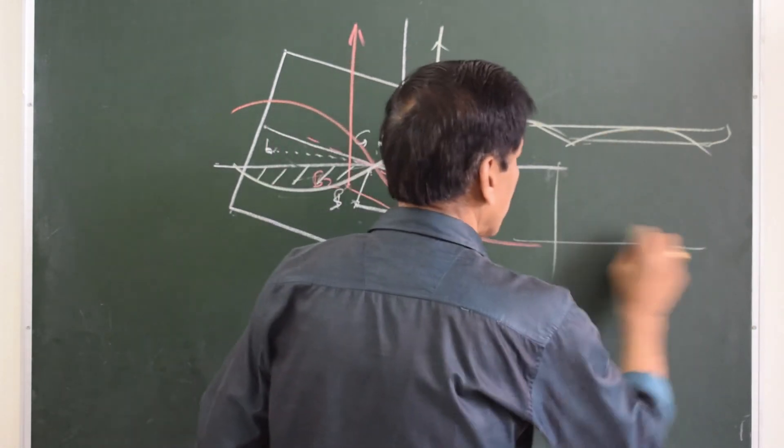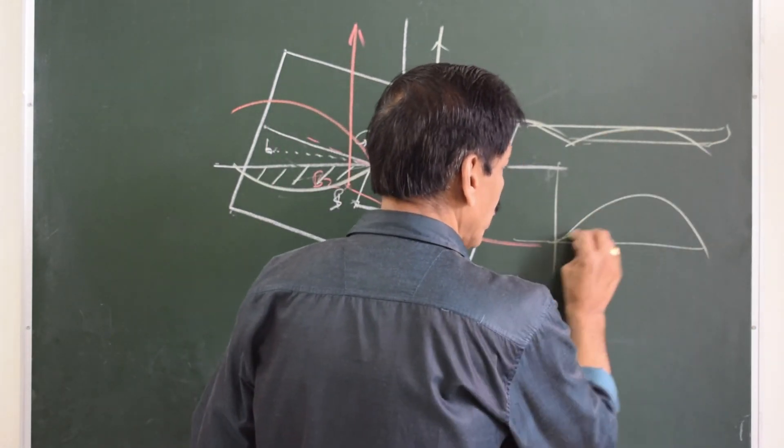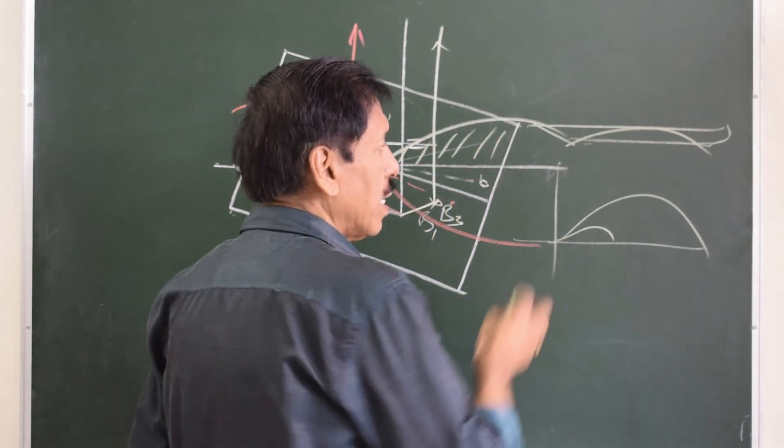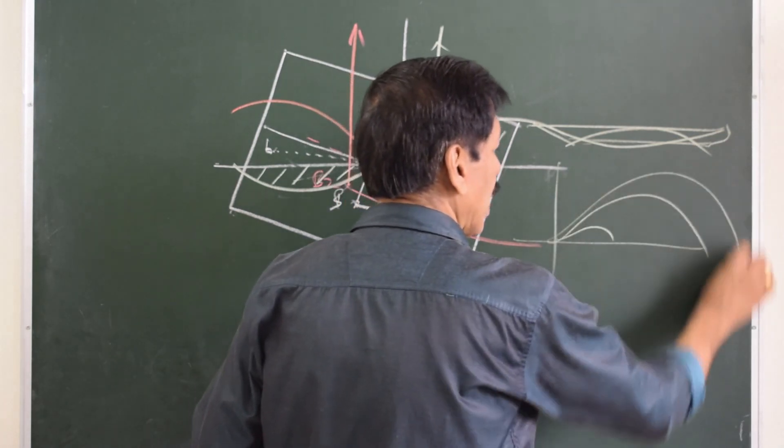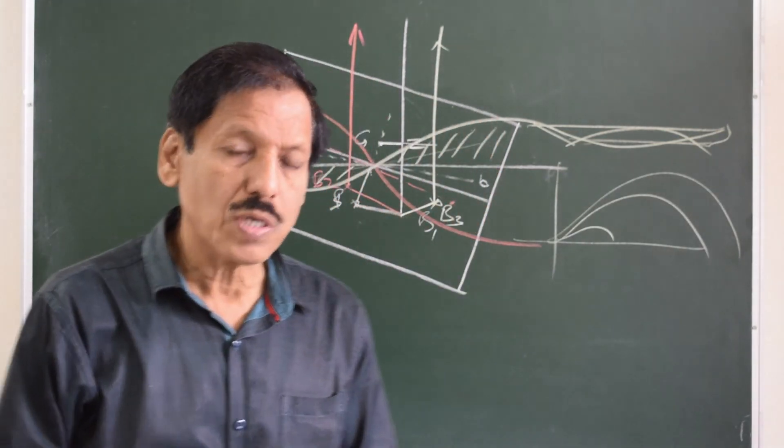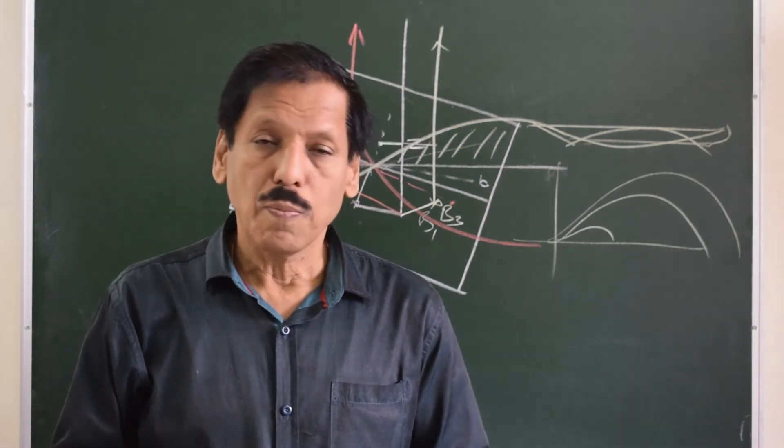What happens when the crest is amidship and what happens when the trough is amidship? The GZ curve shrinks and on another occasion where the trough is amidship, the GZ curve amplifies and this is what gives rise to parametric rolling.